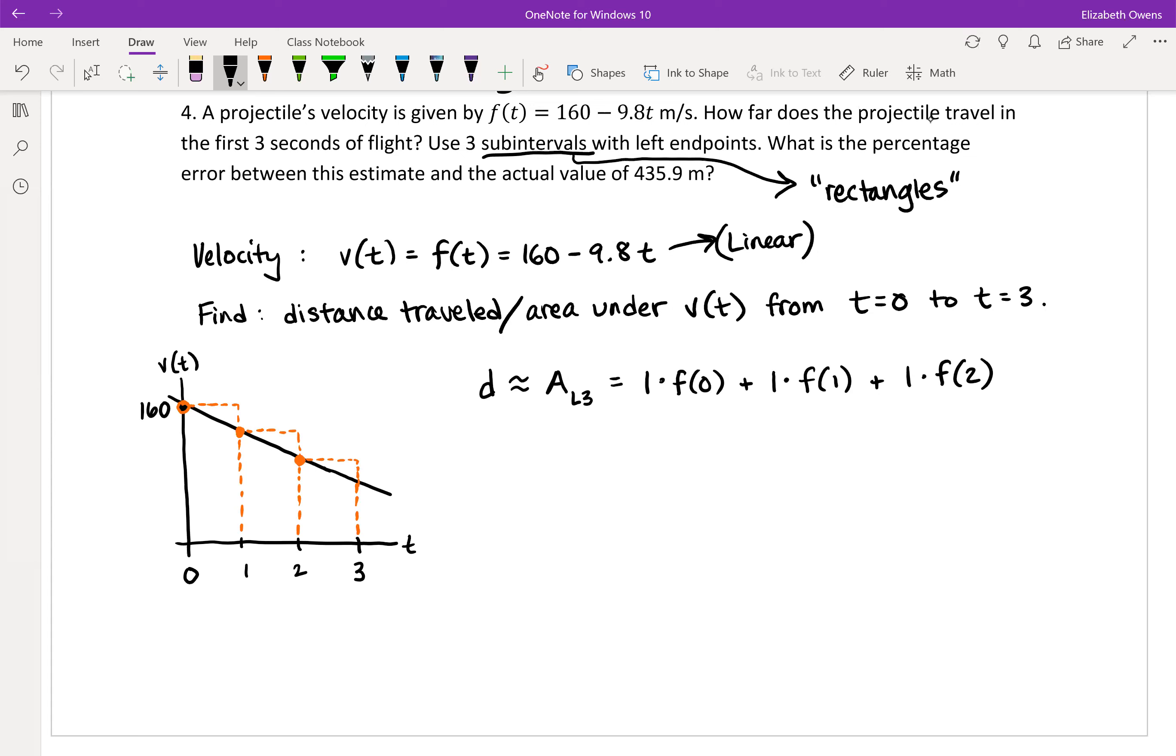Okay. Now to find those function values, you would need to plug in zero, one, and two into our f(t) function. So for instance, f of zero, that's a nice one. 160 minus 9.8 times zero. We already know that's going to be 160. We could see that on the graph. All right. But you would plug in your other points as well. And so we would get distance approximately equal to 160 plus f of one is 150.2 and f of two is 140.4. So this would add together to 450.6 meters for our estimate.